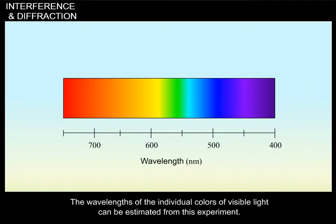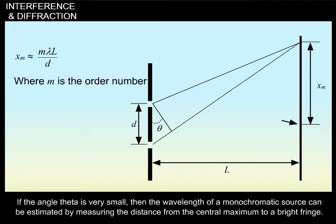The wavelengths of the individual colors of visible light can be estimated from this experiment. If the angle theta is very small, then the wavelength of a monochromatic source can be estimated by measuring the distance from the central maximum to a bright fringe.